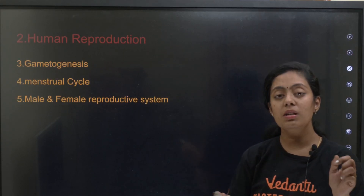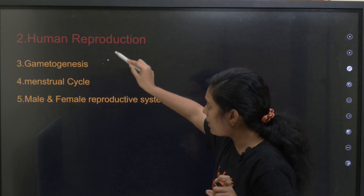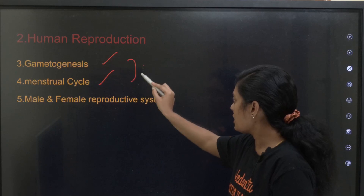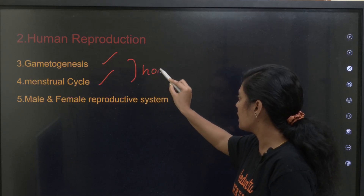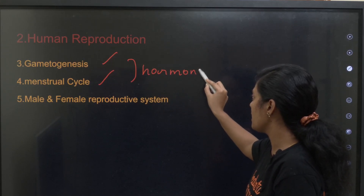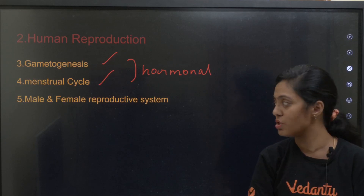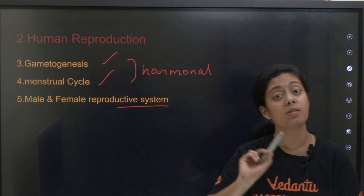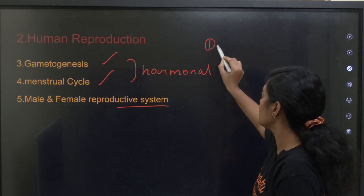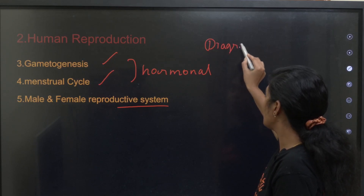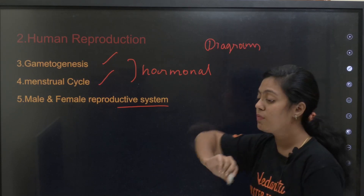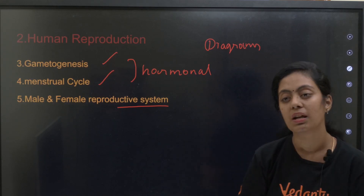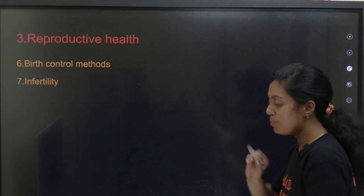Human reproduction: gametogenesis and menstrual cycle are very very important. Especially hormonal control is extremely important — never forget that. Male and female reproductive system diagrams are very very important. Hormonal control is important for both your menstrual cycle and gametogenesis.